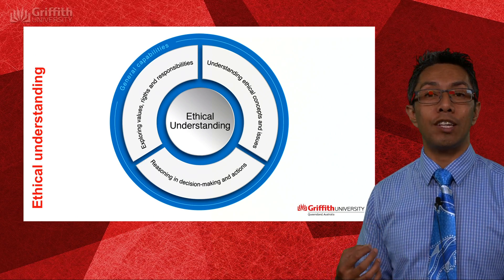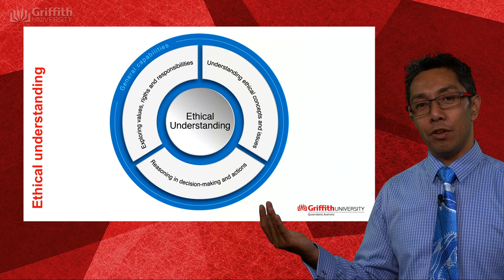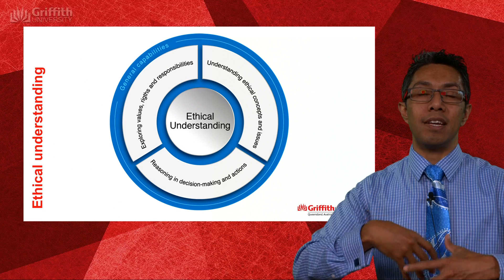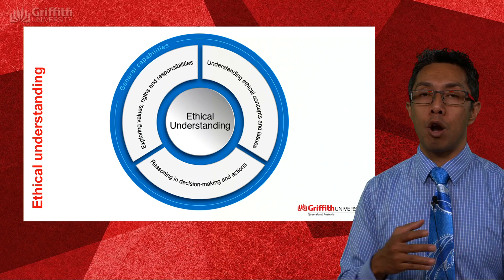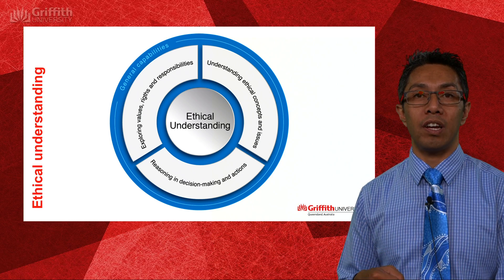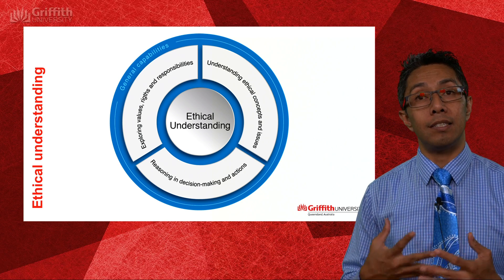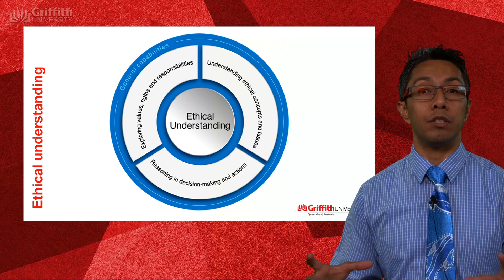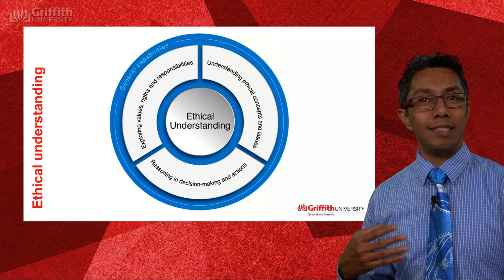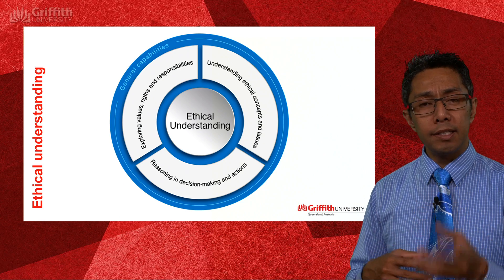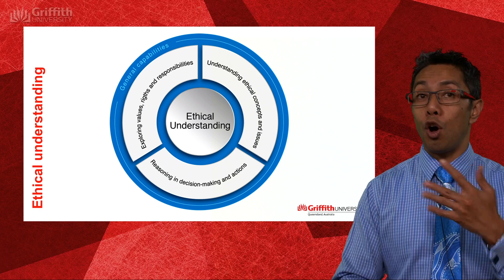Ethical understanding is about doing the right thing. It involves reasoning through decision making and actions — thinking through possibilities, choosing an appropriate course of action based on analysis and evaluation. There's also exploring values, rights, and responsibilities within classroom and societal settings, and understanding different ethical frameworks and being able to apply them within a given situation. Knowing our rights and values within Australia as a whole is a key element of citizenship education.